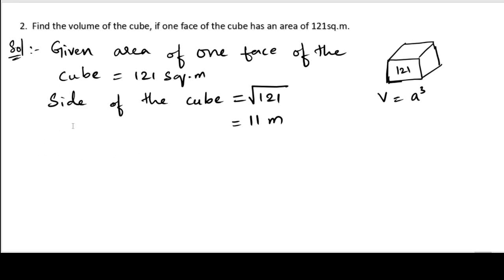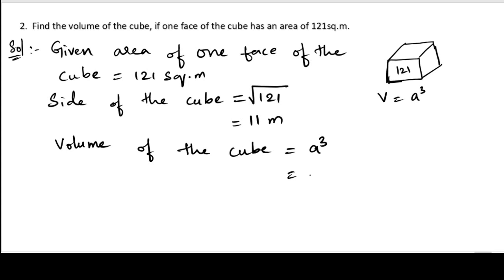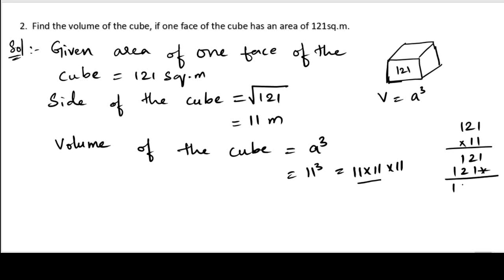Now we have the side, so let us find out the volume. Volume of the cube equals a cubed. A is nothing but the side, so it is 11 cubed. 11 cubed means 11 into 11 into 11. We know that 11 into 11 is 121, so let us multiply 121 by 11. We get 1, 2, 1 and 1, 2, 1 shifted. Adding these, we will get 1331. So the volume of the cube is 1331 cubic meters.